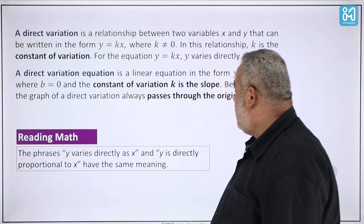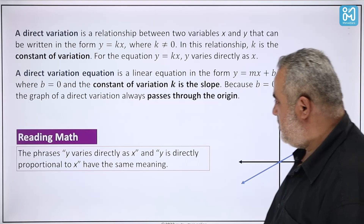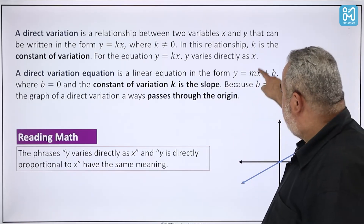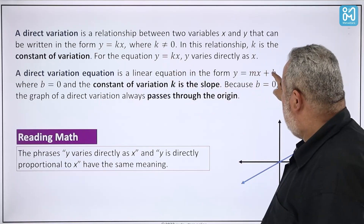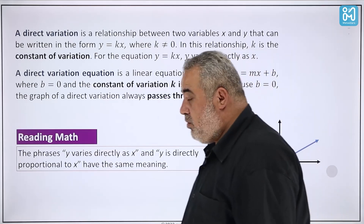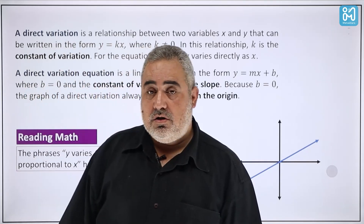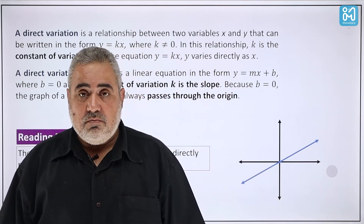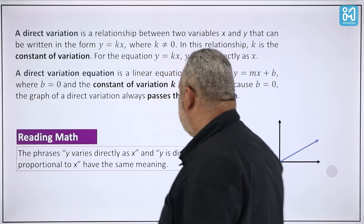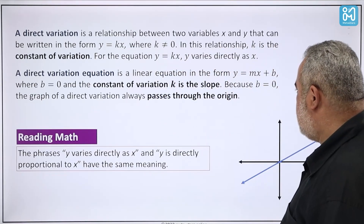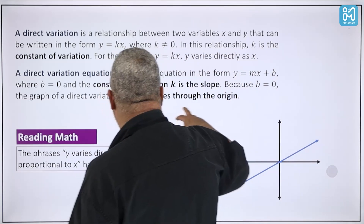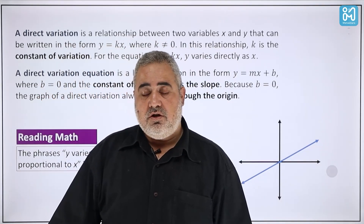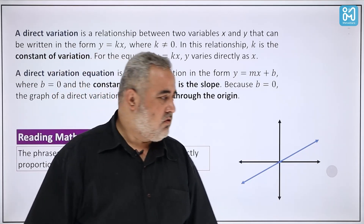For the equation y = kx, y varies directly as x. A direct variation equation is a linear equation in the form y = mx + b, where m equals k and b equals zero, meaning the y-intercept is at the origin. So any direct variation relation, if we draw it, must pass through the origin at (0, 0). We can check if a line passes through (0, 0) to determine if it is a direct variation.